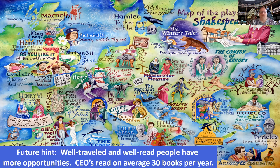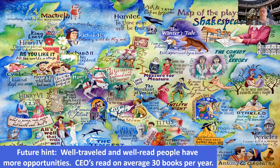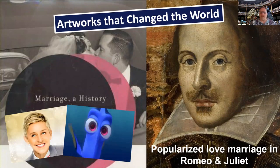One thing I want to emphasize: when you get to your junior year, go study abroad. Here's a map of the places in Shakespeare's plays — even though he himself was not well-traveled, spending his entire life in England and never crossing the Channel to France, which is only an hour and a half away today. A future hint: CEOs of Fortune 500 companies are all well-read and well-traveled. The average CEO reads 30 books per year, constantly absorbing new information, new ways of doing things, different cultures. Well-traveled and well-read people have far more opportunities because they have more experience of what's out there in the world.